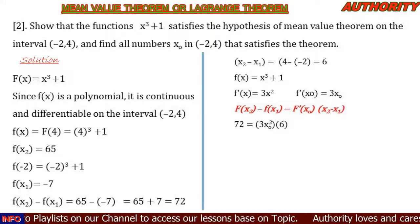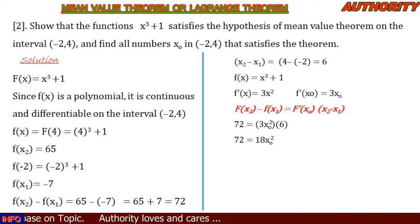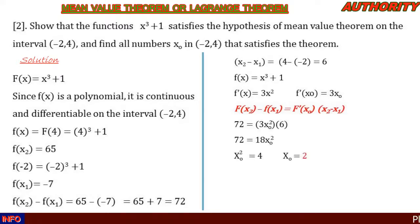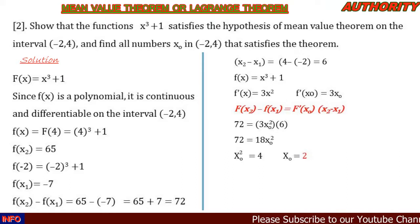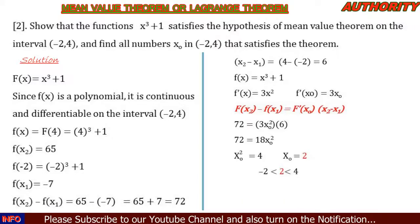So: 72 = 3x₀² × 6 = 18x₀². Dividing both sides by 18 gives x₀² = 4, so taking the square root, x₀ = 2. Since 2 is in the interval (-2, 4) — it is greater than -2 and less than 4 — this confirms the result.